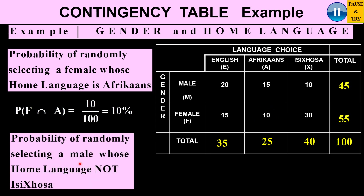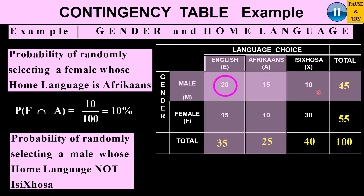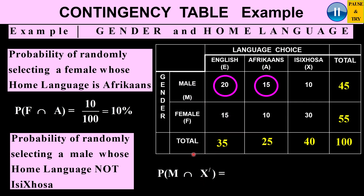Next, we want the probability of randomly selecting a male whose home language is not Isizulu. We want all males, but exclude Isizulu speakers, so we look at English and Afrikaans males: 20 and 15. The probability of selecting a male whose language is not Isizulu is 20 plus 15 equals 35 over 100, which is 35%.